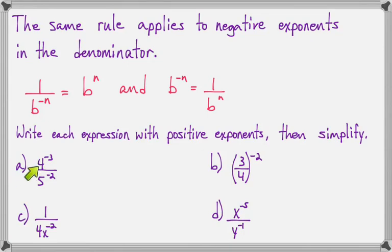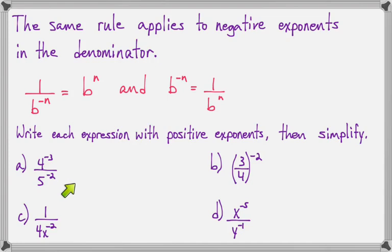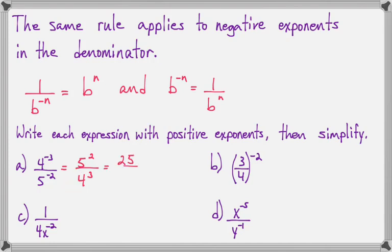On 4 to the negative 3rd over 5 to the negative 2nd, each of these has a negative exponent, so in order to fix them both, we'll have to move both. I can make 4 to the negative 3rd positive by writing it in the bottom. I can make 5 to the negative 2nd have a positive exponent by writing it in the top. Now I can work out: 5 squared is 25, and 4 to the 3rd is 64.